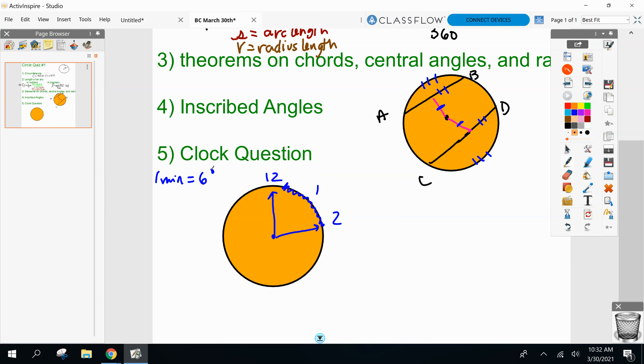So how many degrees is it from 12 to 2? Sixty. It's sixty minutes from 12 to 2. It's sixty degrees. Every minute is six degrees. So that forms a sixty degree angle as you go from 12 to 2, right?